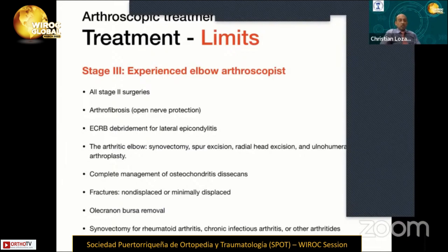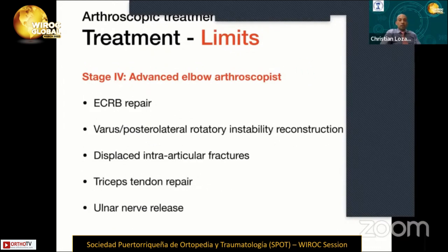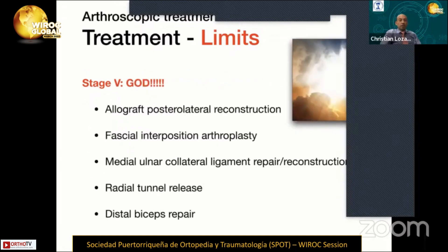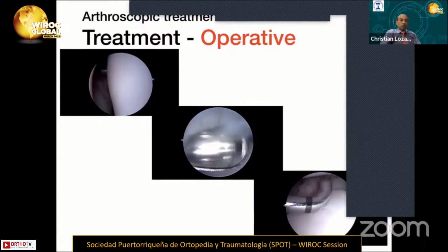Stage 3 also includes complete management of osteochondropathy, fixation of some fractures, olecranon bursa removal, and synovectomy for rheumatoid arthritis, chronic infection arthritis, or other arthritis. Stage 4 advanced elbow arthroscopy includes tendon repair, instability reconstruction, closed reduction and internal fixation of intra-articular fractures, triceps tendon repair, and ulnar nerve release. Stage 5 — the most demanding — includes allograft posterolateral reconstruction, fascia interposition arthroplasty, medial ulnar collateral ligament repair and reconstruction, radial tunnel release, and distal biceps repair.